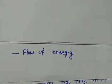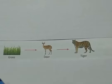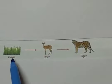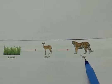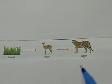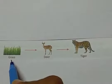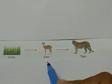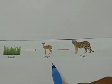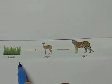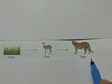The food chain shows how energy and nutrients are passed from one group of organisms to another in the same ecosystem. Here I am showing you the simplest food chain with three organisms: grass, deer, and tiger. Grass is the producer, deer is herbivorous and eats the grass, and tiger is carnivorous and eats the deer. This makes a sequence showing the flow of energy from producers toward higher-level organisms.